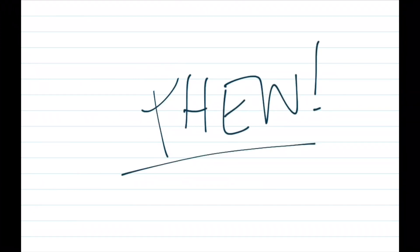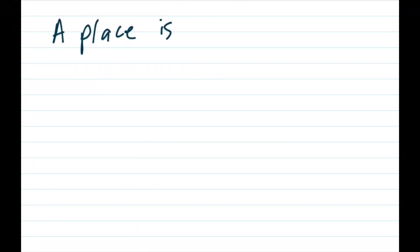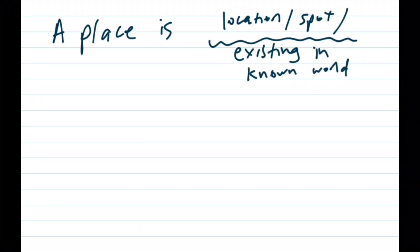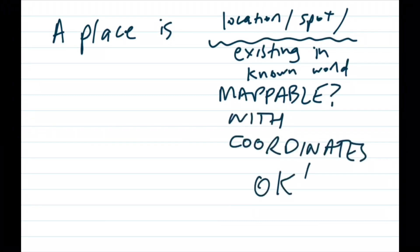So let's start this again. So here's what we've got so far. A place is, and here's where you take your pick of location, spot, position, something that implies that it exists in the real world, not in your mind. You can put it on a map. It's got a latitude. It's got a longitude. It's got coordinates. Okay. This is geography. You get the picture.